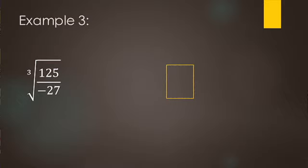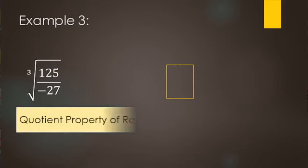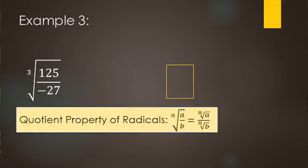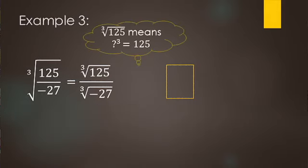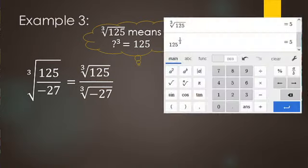Here we have the cube root of 125 over negative 27. We want to break this up into smaller chunks, so rewrite it as cube root of 125 over cube root of negative 27. We need the cube root of 125 — that's three of what number multiplied together equals 125. Using a calculator, you can use the nth root button, enter index three and then 125.